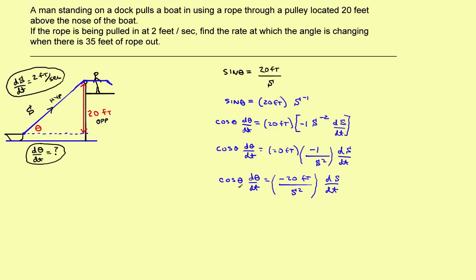Now I want to solve for dθ/dt, so I'll take the cosine from this side and move it to the bottom on this side. That gives us: dθ/dt equals 1 over cosine of theta, times negative 20 feet divided by S squared, times ds/dt. The problem is set up the way I want, and now it's just a matter of plugging in the things I know.